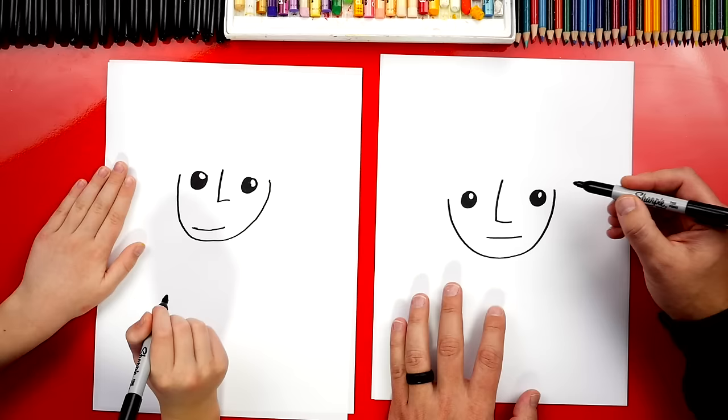Now let's draw his ears. We're going to draw a C shape on the left, backwards C over here on the right.